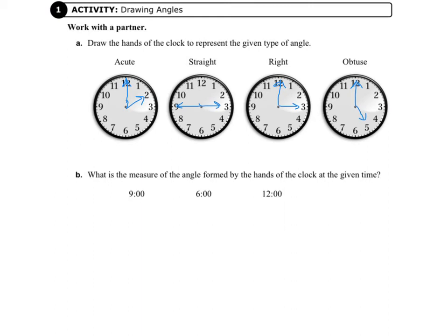Letter B asks us, what is the measure of the angle formed by the hands of the clock at a given time? So if we had a clock showing 9 o'clock, the big hand would be straight up and the little hand would be to the left. So that would be 90 degrees.